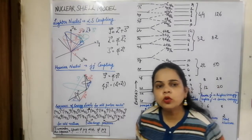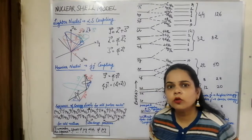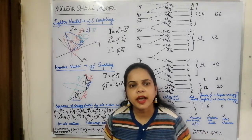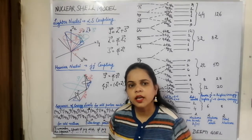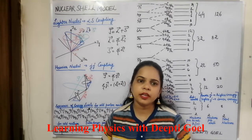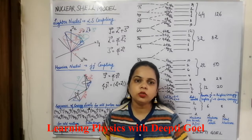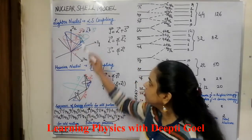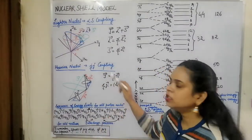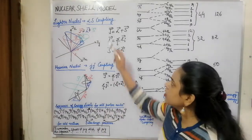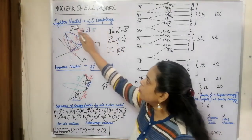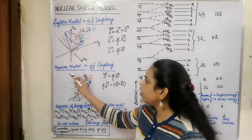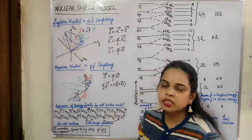What led to the development of the nuclear shell model? Maria Mayer and Jensen had already proposed that we have to consider the spin-orbit coupling or interactions. The spin-orbit coupling was of two types: LS coupling and JJ coupling. LS coupling was primarily applicable to lighter nuclei, whereas heavier nuclei preferred JJ coupling.